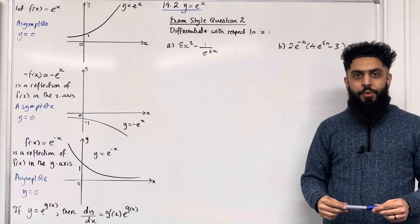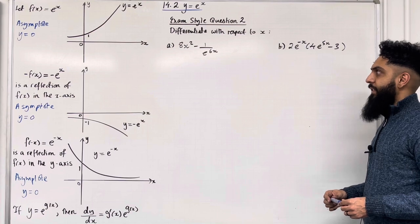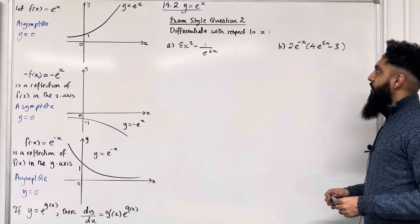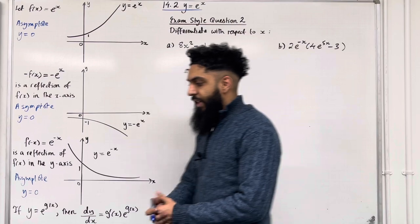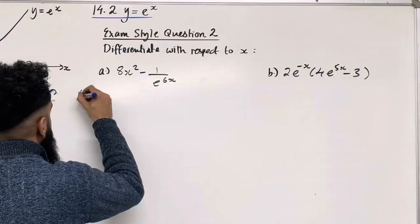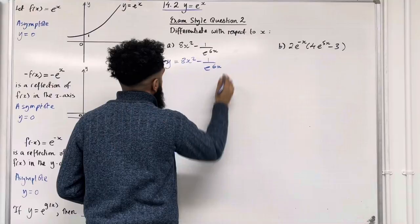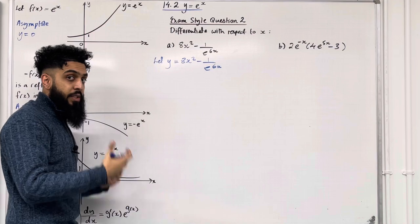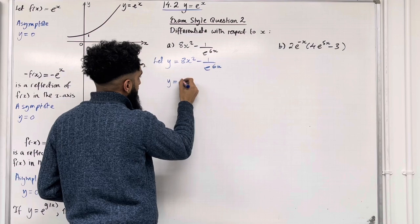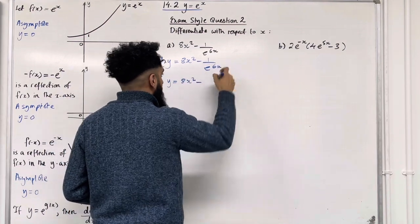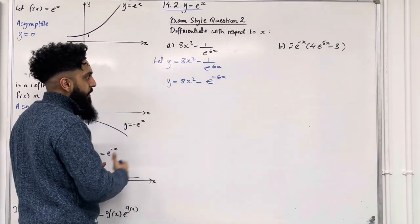Moving on to exam style question 2: differentiate with respect to x. Part A: 8x squared minus 1 over e to the power 6x. Part B: 2 e to the power minus x multiplied by 4 e to the power 5x minus 3, all in brackets. For part A, the first step is to let y equal 8x squared minus 1 over e to the power 6x. The first term can be differentiated straight away, but the second term we have to rewrite. Hence y is equal 8x squared minus e to the power minus 6x.